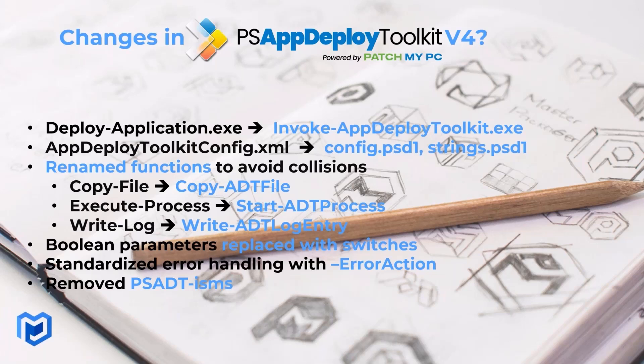Error handling in v3 used custom parameters, but v4 moves to the common ErrorAction parameter. They also removed what Mitch from the PSADT team calls 'PSADTisms' — all functions now use PowerShell-approved verbs. For example, the v3 function Execute-Process used the non-approved verb 'execute'; it's now called Start-ADTProcess using the approved verb 'Start'. Additionally, process lists that previously had to be specified as a comma-separated string are now properly an array of strings.